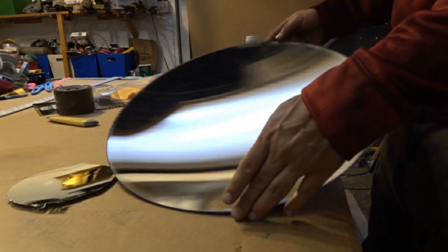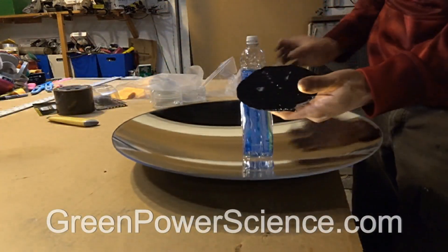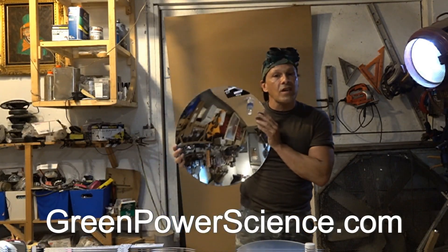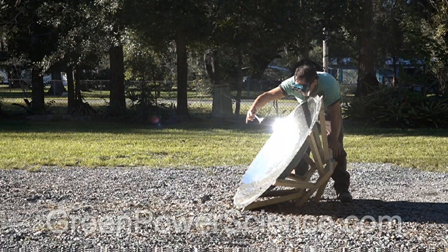One note, the parabolic mirrors available on our website greenpowerscience.com are not coated with gallium. They are a true mirrored surface behind a UV resistant acrylic and designed for extended outdoor exposure and extreme conditions.